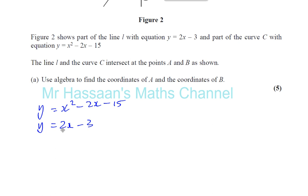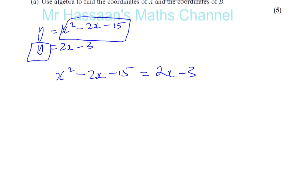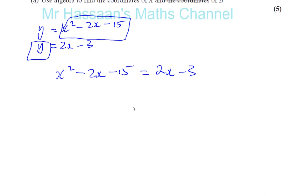I can basically replace the y in this equation with whatever is in the other equation. So, for example, I can change this y with x squared minus 2x minus 15 because they're equal to each other. So when x squared minus 2x minus 15 is equal to 2x minus 3.